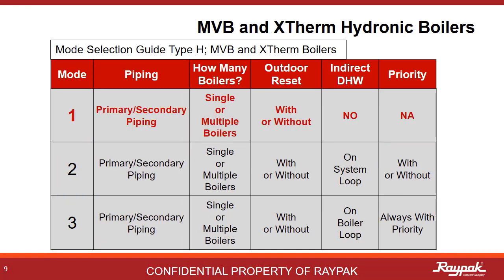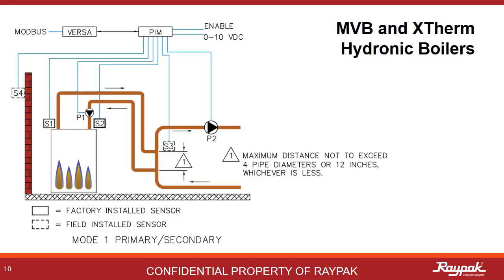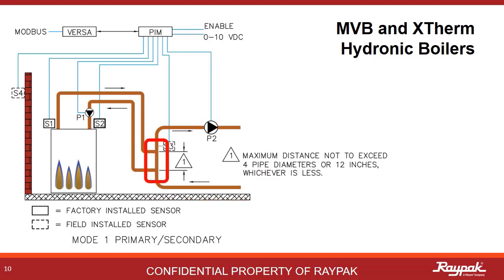We will discuss the details of Mode 1 first, as it is by far the most common. Here is a diagram for a Mode 1 primary-secondary system with a single boiler. It's primary-secondary because there are two loops: the boiler loop and the system loop. That's how you should refer to them — the boiler loop and the system loop — not the primary loop and the secondary loop. The place where the two loops overlap is called the decoupler. The decoupler is the magic of a primary-secondary system. When built properly, this will allow the bigger system pump to run when the boiler is not running without forcing water through the boiler.